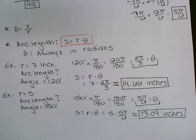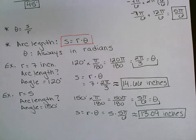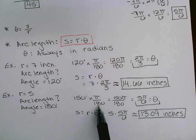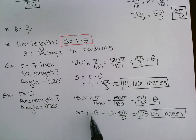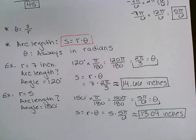Second example: radius is 5 inches, central angle is 150 degrees. Convert 150 degrees to radians: multiply by pi over 180 to get 5 pi over 6. Then S equals 5 times 5 pi over 6. In your calculator: approximately 13.09 inches.